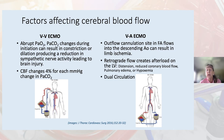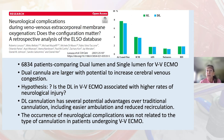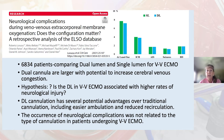Once the heart begins to beat again, there is the opportunity for dual circulation, which provides deoxygenated blood to the head vessels. The LaRusso paper is a retrospective analysis of the ELSO database utilizing 6,834 patients, comparing dual lumen and single lumen cannulas for VV ECMO. Dual lumen cannulas are larger with potential to increase cerebral venous congestion. Their hypothesis was whether dual lumen VV cannulation is associated with higher rates of neurologic injury.